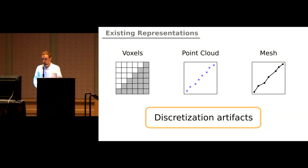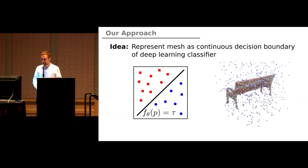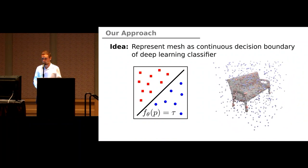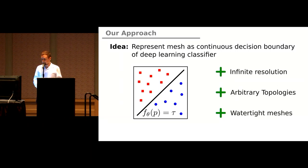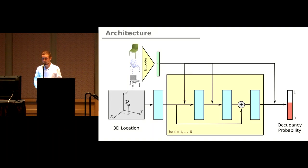We therefore propose Occupancy Networks, representing geometry implicitly as the decision boundary of a deep learning classifier. Our representation has key advantages: it represents meshes at infinite resolution, can represent arbitrary topologies, and produces watertight meshes. The input to our architecture is 3D locations and the output of a task-specific encoder, with output being occupancy probabilities for each 3D point. We condition our network using conditional batch normalization between fully connected ResNet blocks.